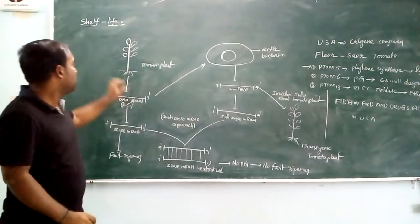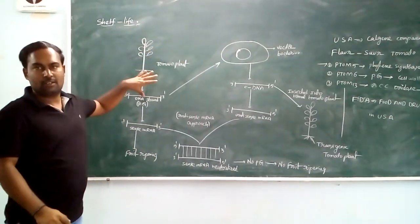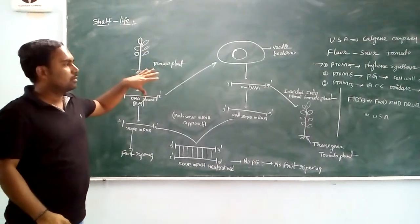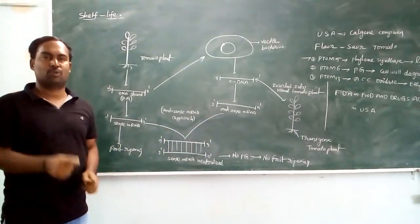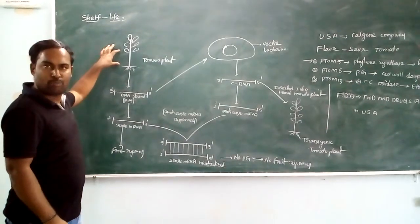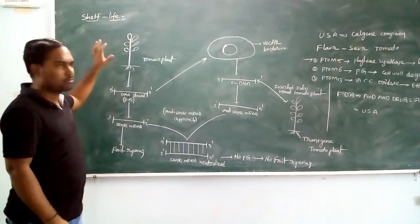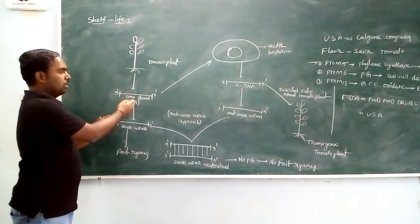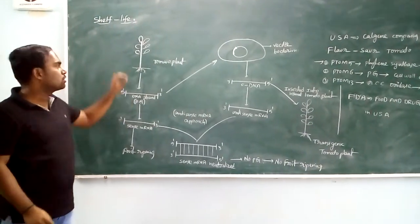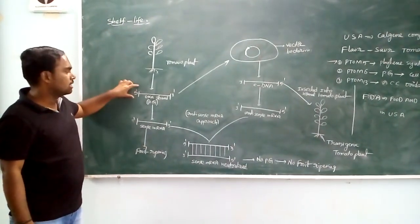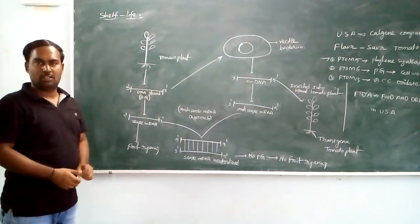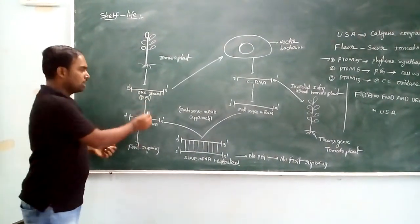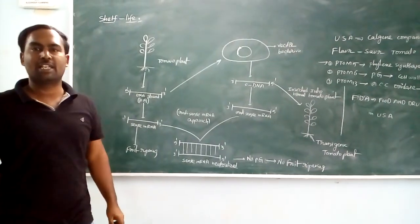This entire technique is based on antisense mRNA approach. First, from the normal tomato plant, a segment of DNA is isolated. That is five prime to three prime direction DNA strand. This DNA strand encodes the enzyme PG, Polygalacturonase.